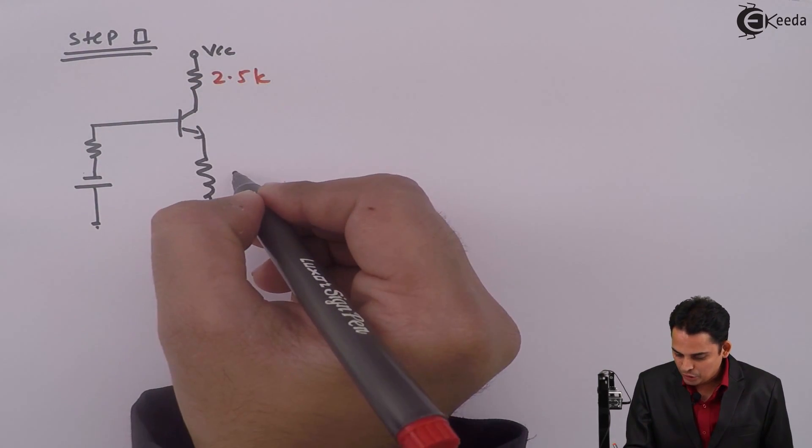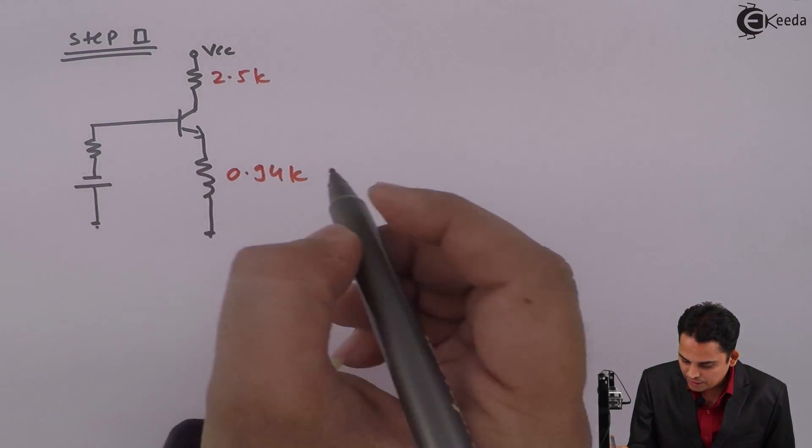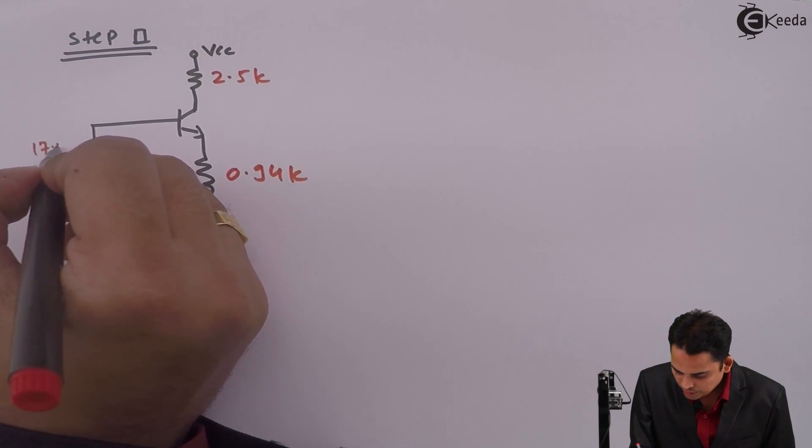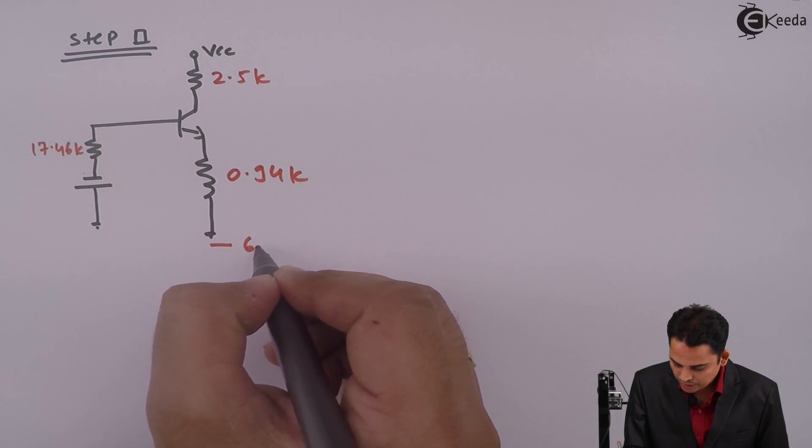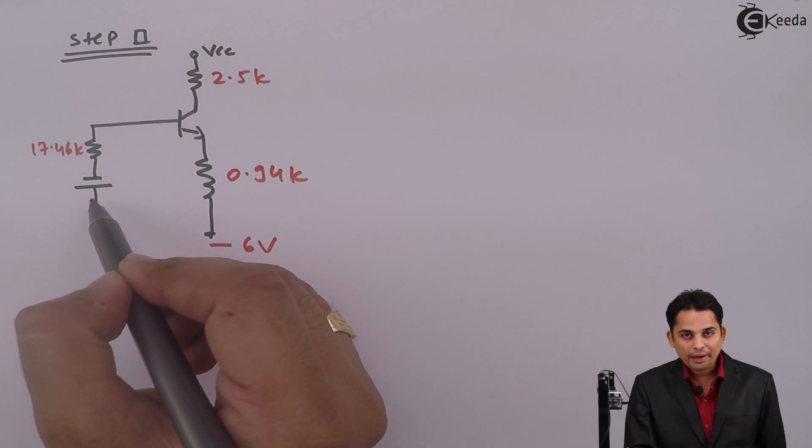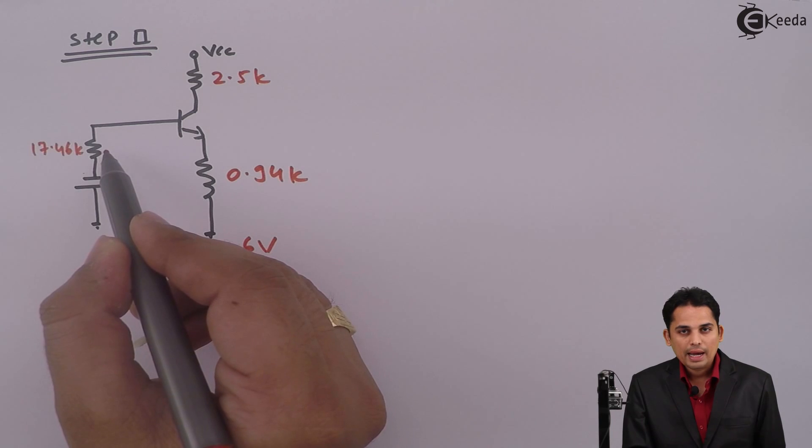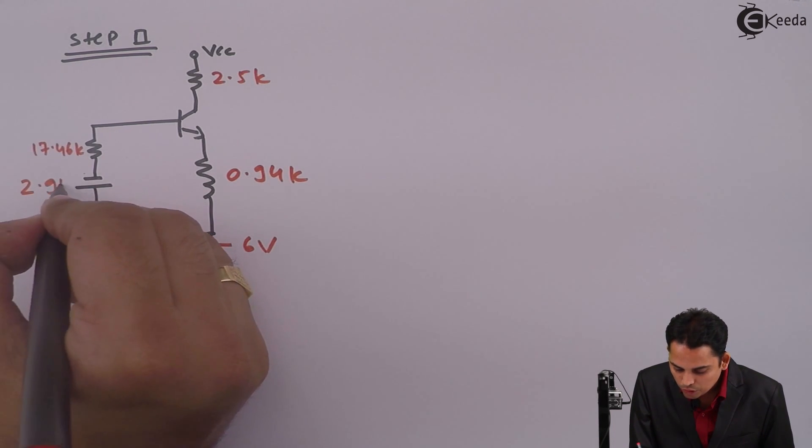Value of RE is 0.94 kilo. Value of RTH is 17.46 kilo. This value is nothing but minus 6 volt. Value of VTH is now see here. The battery is positive to negative. And hence I will write value of this is plus 2.91 volts.